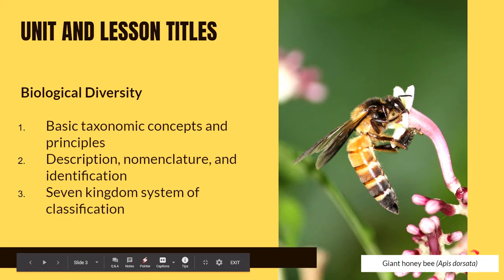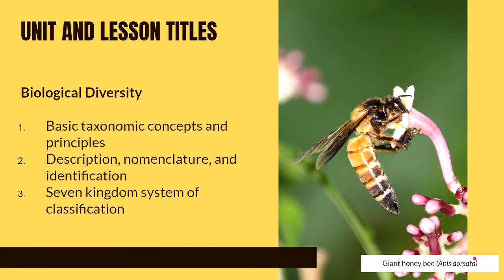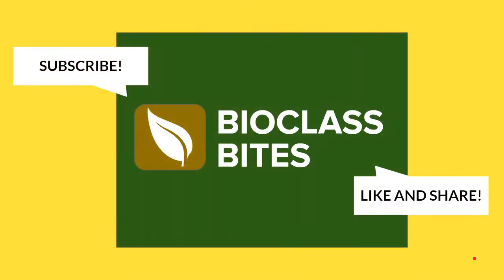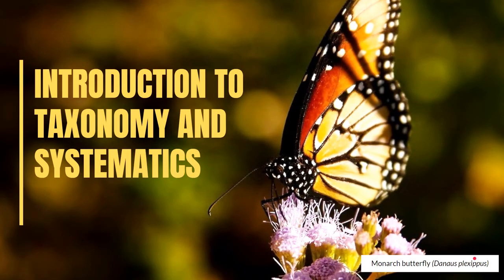This is how scientific names are written, and we will learn more about that as we go along. Previously, we've seen an image of a monarch butterfly with its scientific name, Danaus plexippus.